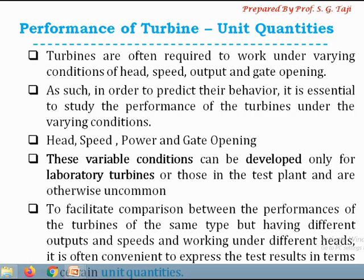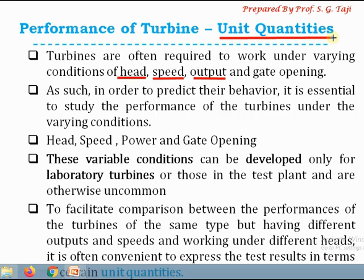Whenever we are going to look at a single turbine working under different conditions — like if the head is going to change or the speed is going to change — the same turbine will produce different power output. So in that condition, whenever we are going to compare the performance of the same turbine working under variable conditions, we make use of unit quantities. Remember: whenever we compare two different types of turbines, we use specific speed; whenever we compare the performance of the same turbine working under different conditions, we use unit quantity.